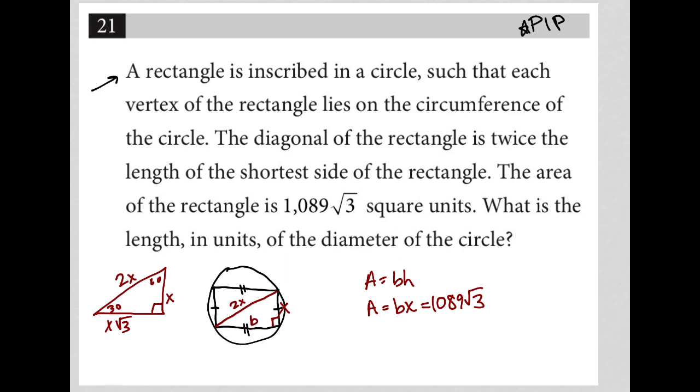The special right triangles that are provided for us in the reference information are the 30-60-90 and the 45-45-90 right triangle. You should also be aware of a 3-4-5 right triangle. This is for side lengths; these are for angle degree measurements.